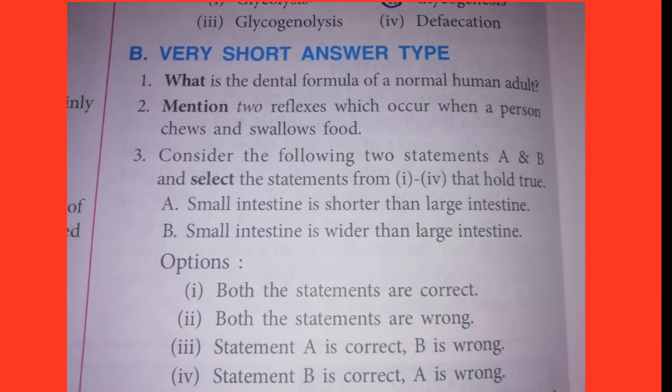Third one: Consider the following two statements A and B, and select the statements from I to IV that hold true. A: Small intestine is shorter than large intestine. B: Small intestine is wider than large intestine. Options — I: Both statements are correct. II: Both statements are wrong. III: Statement A is correct, B is wrong. IV: Statement B is correct, A is wrong. Answers showing on screen.